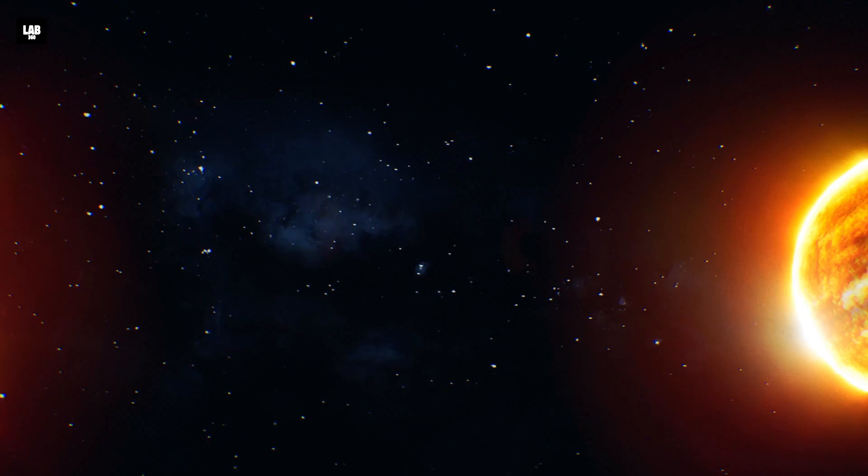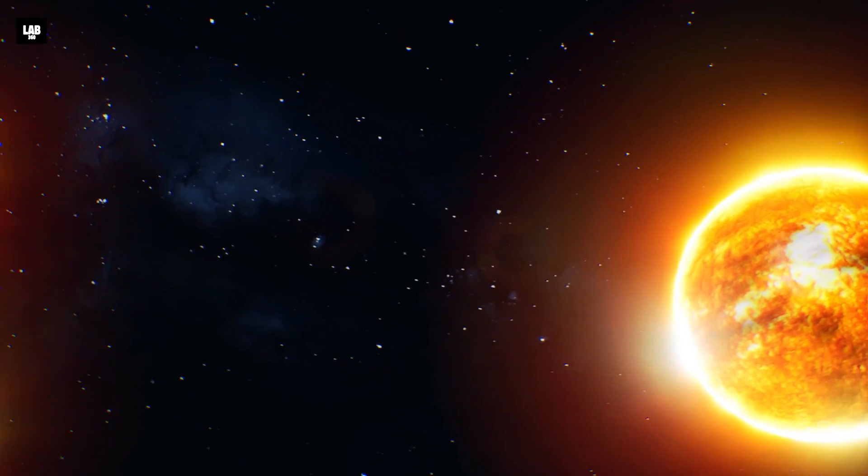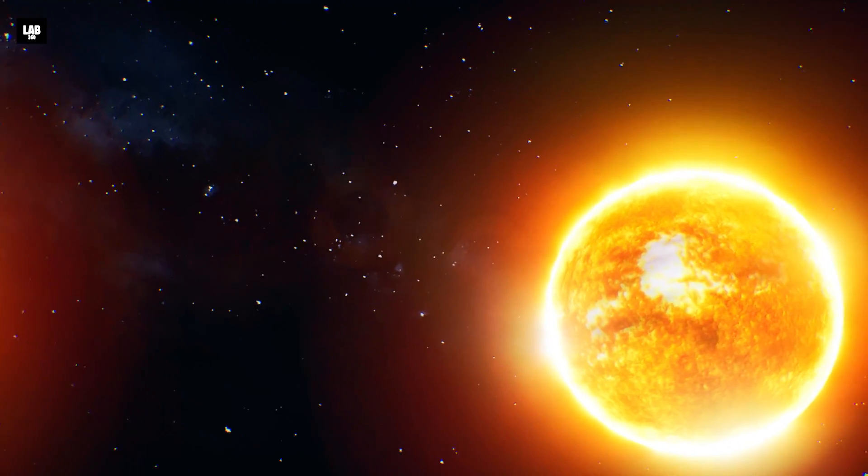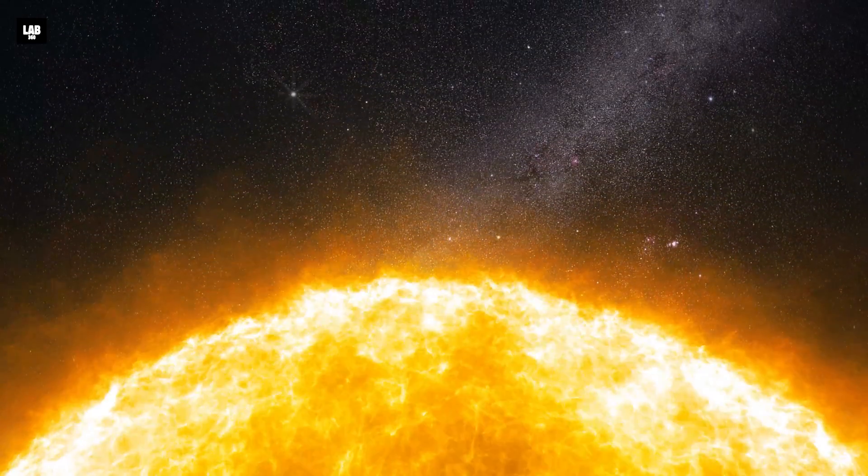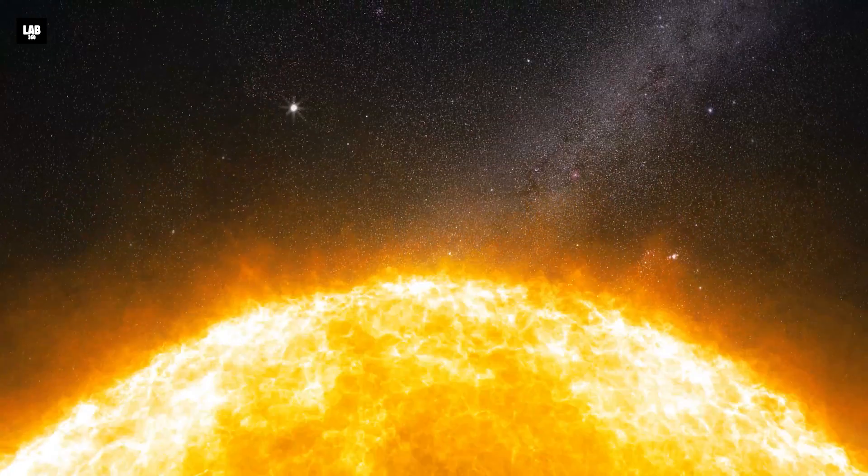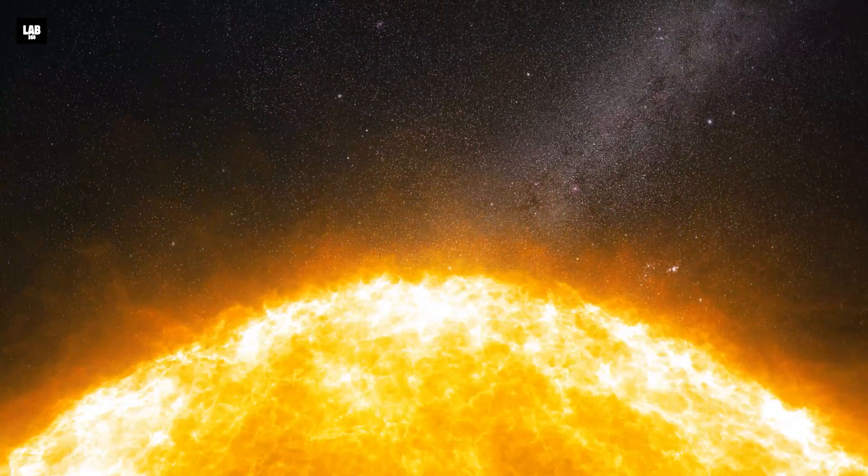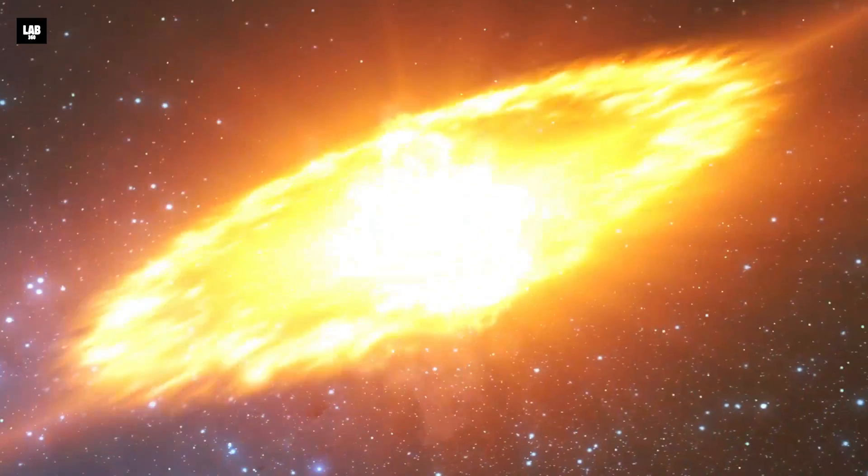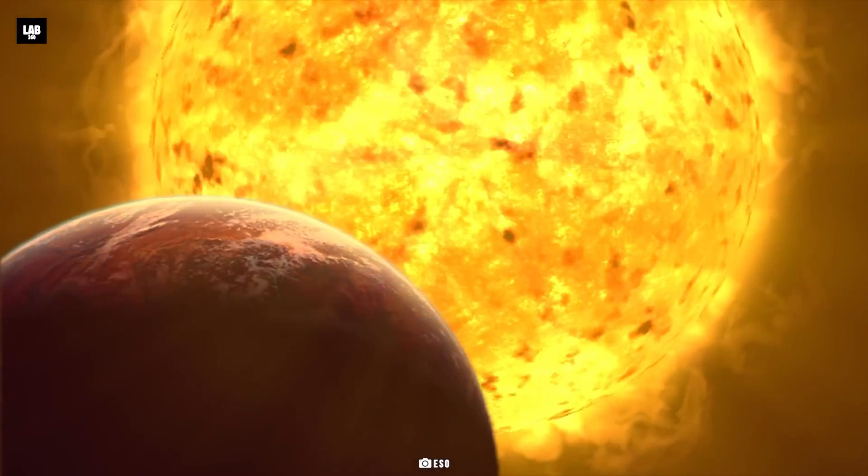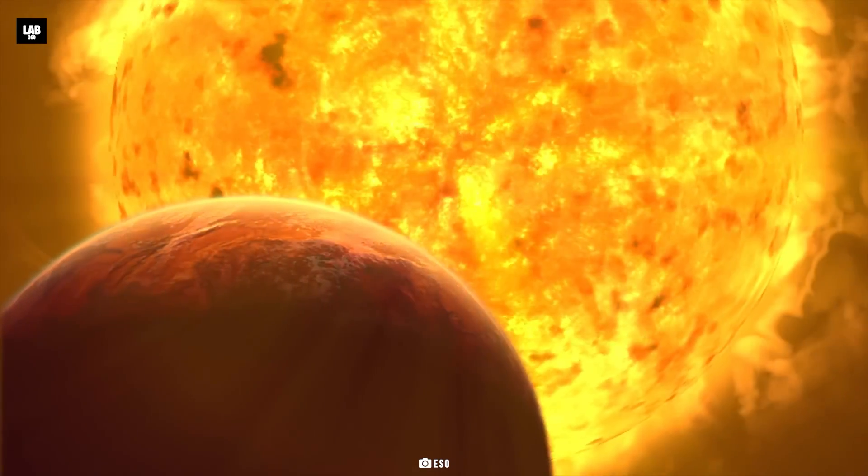For about 1 billion years, it will continue to exist in this red giant phase. At this point, the blown-up red giant's core will not remain hot enough to oppose gravity, and it will give in to gravity. Its core will collapse, leading to an explosion of the outer layers. Our sun at this point will engulf all planets till Earth.